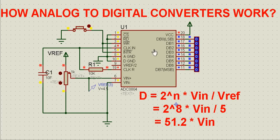Pin number four and pin number 19 are used to control the conversion time of the ADC. That time is given by 1.1 times R1 times C1. When the conversion is done, the INTR pin — pin number five — becomes zero.